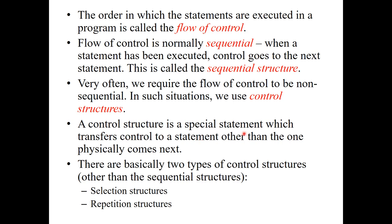What is a control structure? It is a special statement — C++ consists of statements and words just like any other language. It is a special statement which transfers control to a statement other than the next one in sequence. Usually we have two types of control structures in C++: selection structures and repetition structures. Repetition structures repeat themselves for a certain number of times, and selection structures work based on a condition — given a condition, you select certain outputs.